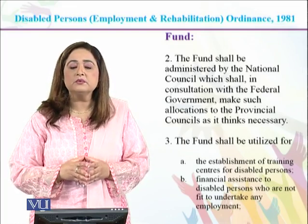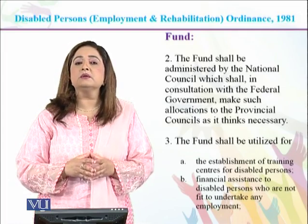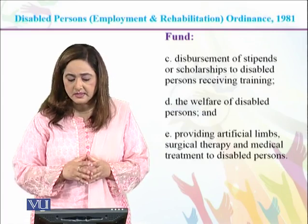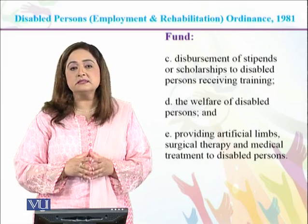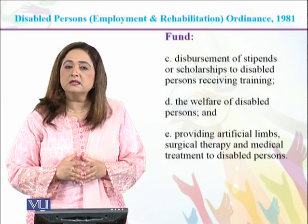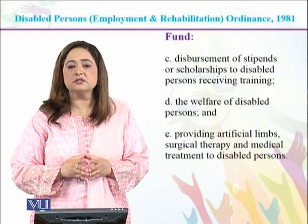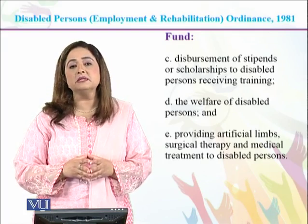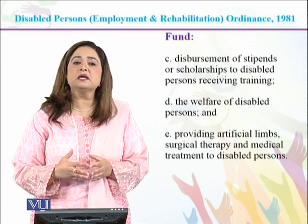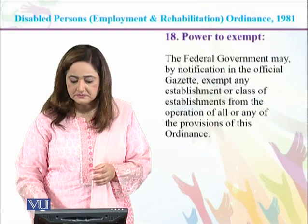Stipends can be paid from these funds if a disabled person in a training center is trained for a skill or vocational training so they can engage in economic activity. This fund can also be available for disabled persons who are not fit for any kind of job, for rehabilitation and livelihood support. It can also be utilized for the provision of artificial organs, artificial limbs, physical therapy, surgical therapy, and medical treatment prescribed by a doctor to disabled persons.